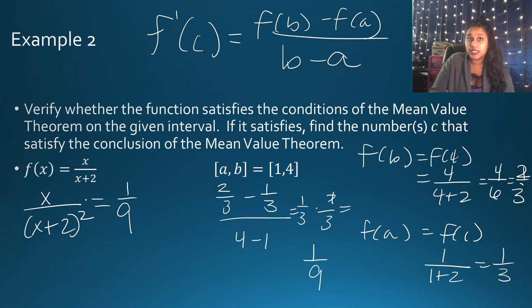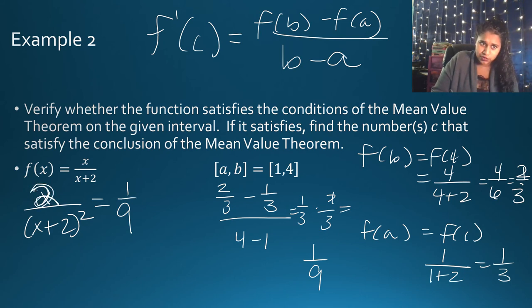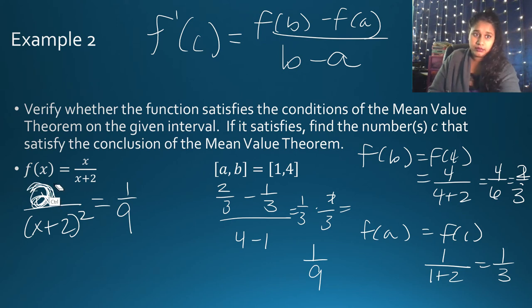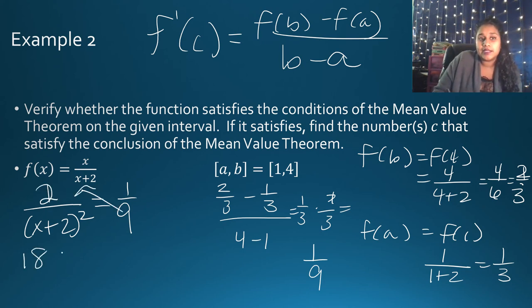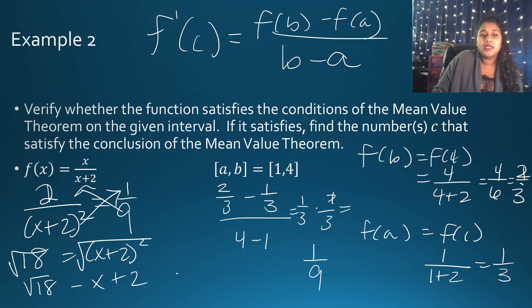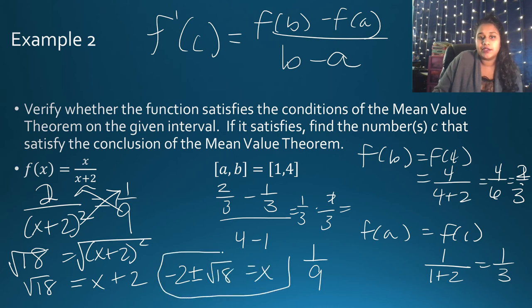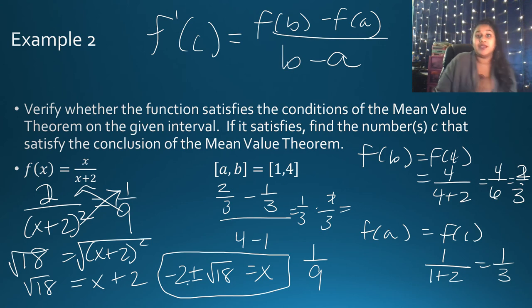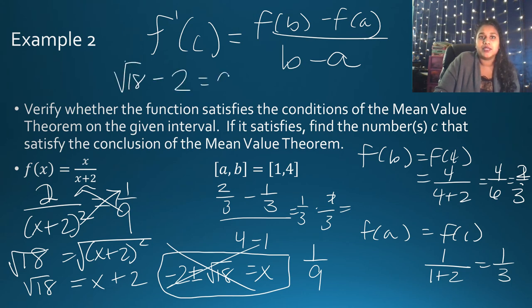Cross-multiplying gives 2 × 9 = (X + 2)², so 18 = (X + 2)². Taking the square root: X + 2 = ±√18, so X = -2 ± √18. Checking the interval: -2 - √18 is a negative number outside [1, 4], so we discard it. Therefore the only valid answer is C = -2 + √18. It's important to double-check that your C value falls within the given interval.